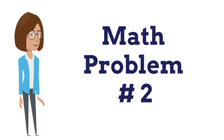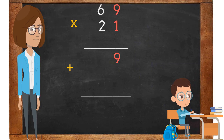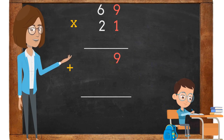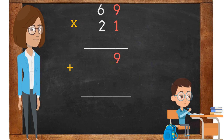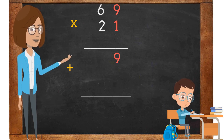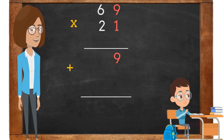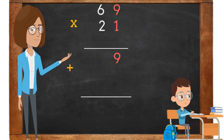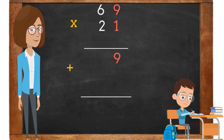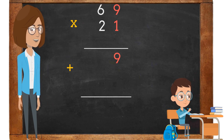Math problem number 2. Let's look at this math problem: 69 times 21. The first step will be to multiply the number 1 in the ones place by the 9 in the ones place. 1 times 9 is 9.